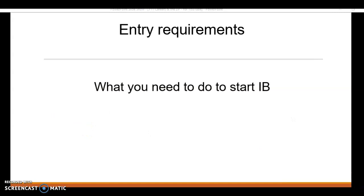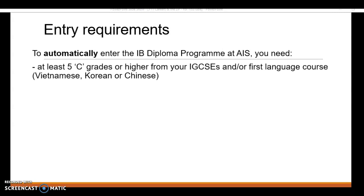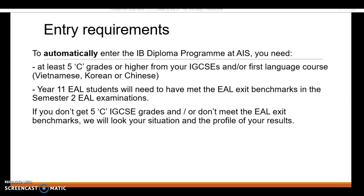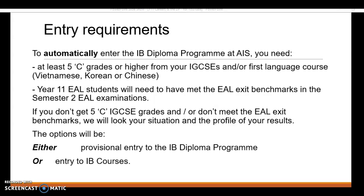What do you need to start doing IB next year? We have new entry requirements. If you get five IGCSE passes at grade C or higher, plus passes in your first language course, you automatically enter the IB diploma. If you're a Year 11 EAL student, you'll also need to have met the EAL exit benchmarks. If you don't get five IGCSEs, that may still be okay - we will look at your results in August and decide the best path for you. Choices will be provisional entry to the IB diploma or IB courses.